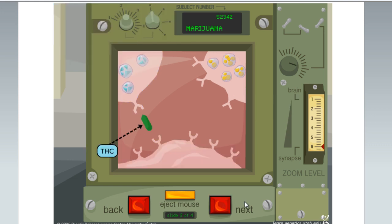THC, the active chemical in marijuana, mimics anandamide and binds to cannabinoid receptors. Inhibition is turned off and dopamine is allowed to squirt into the synapse.